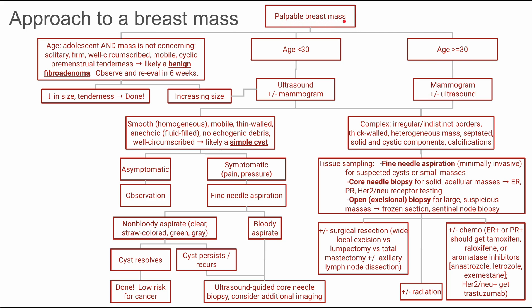First, if a patient comes in with a palpable breast mass, you're going to stratify what you're doing based on their age. Let's start with the simplest case in adolescence. If you have an adolescent and the mass is not concerning, meaning it has the following features: there's only one, it's firm, pretty well circumscribed, mobile, and cyclic with their periods — becoming tender slightly before their periods — it's likely a benign fibroadenoma. You can observe a mass like this, but this is really the only mass that you should just observe and do nothing else.